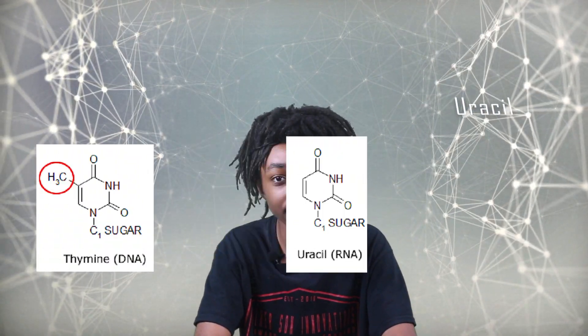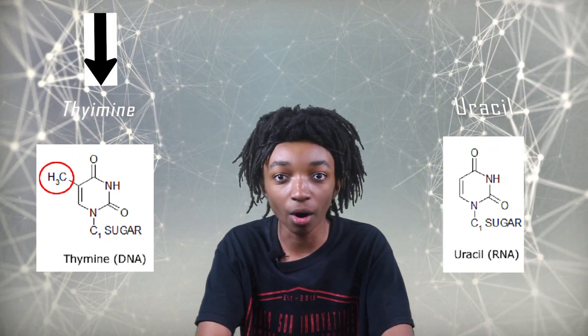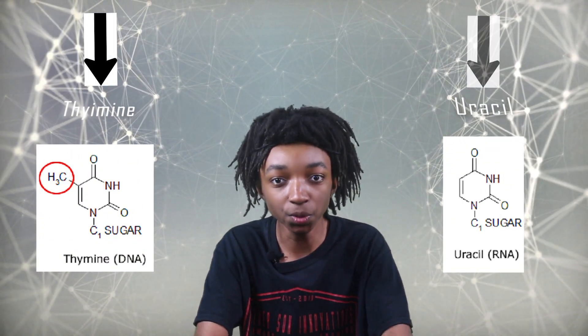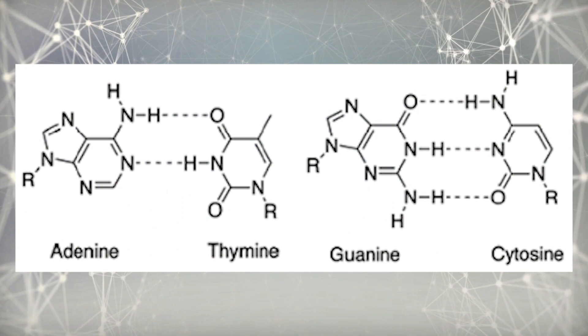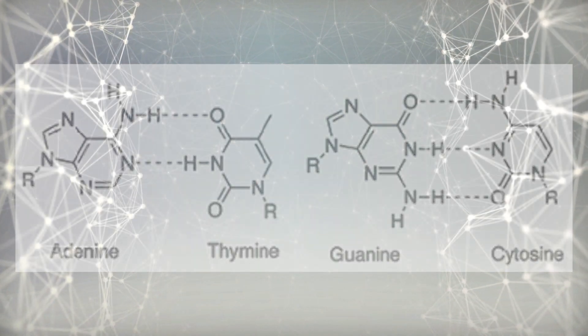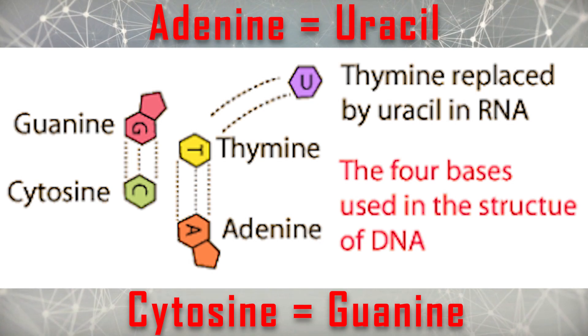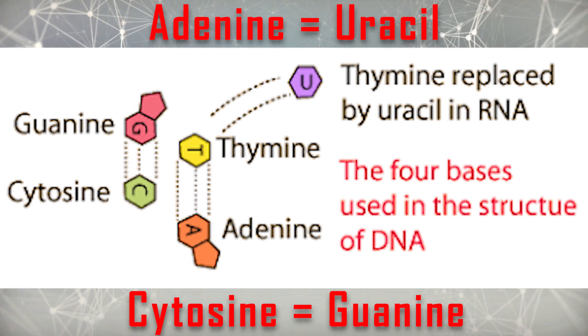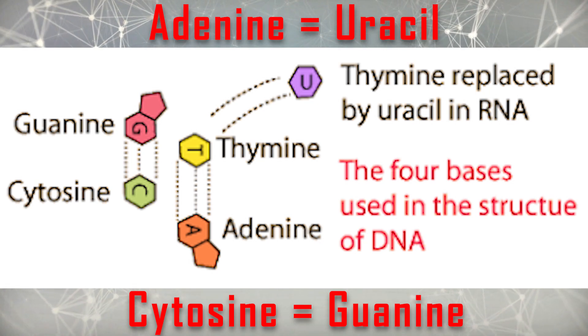Number three, DNA contains the nitrogenous base thymine, while RNA contains uracil. Number four, to expand on that: during DNA replication, adenine pairs with thymine and cytosine pairs with guanine. During transcription from DNA to RNA, adenine will now pair with uracil and cytosine will still pair with guanine.